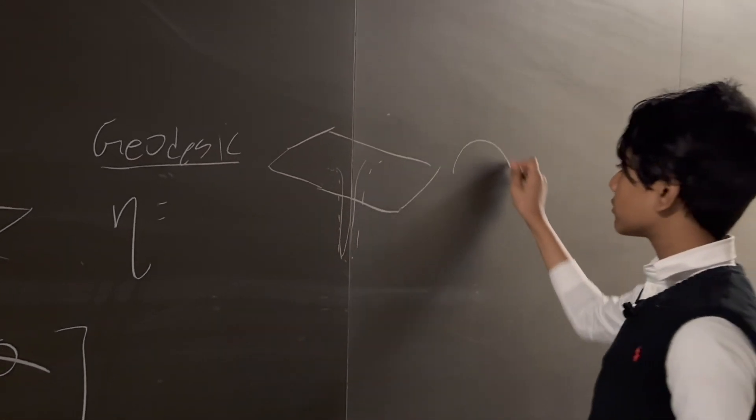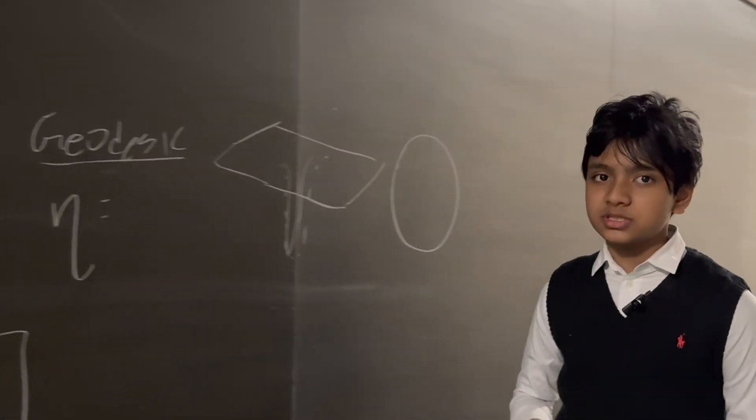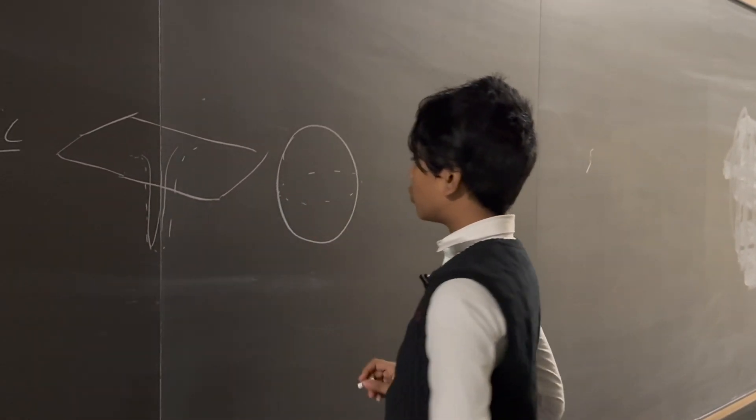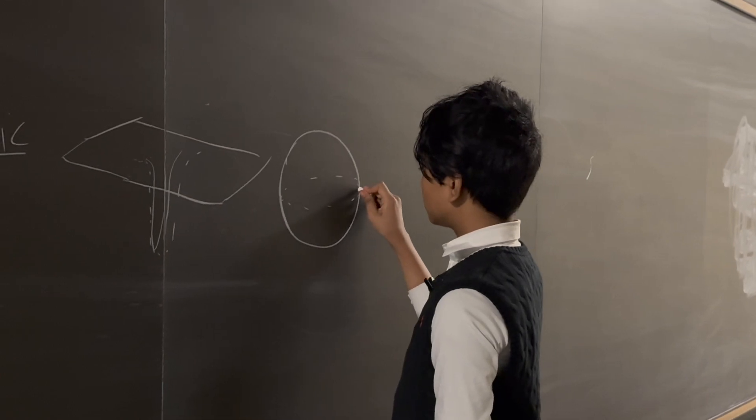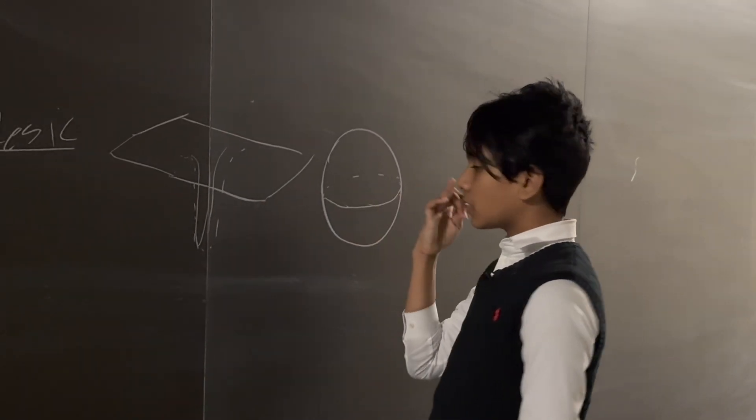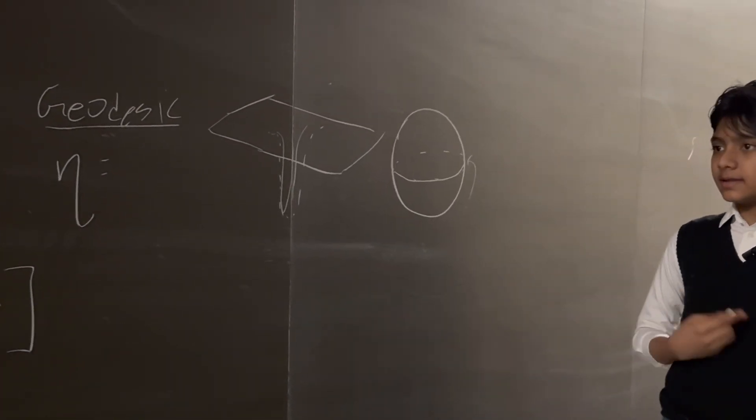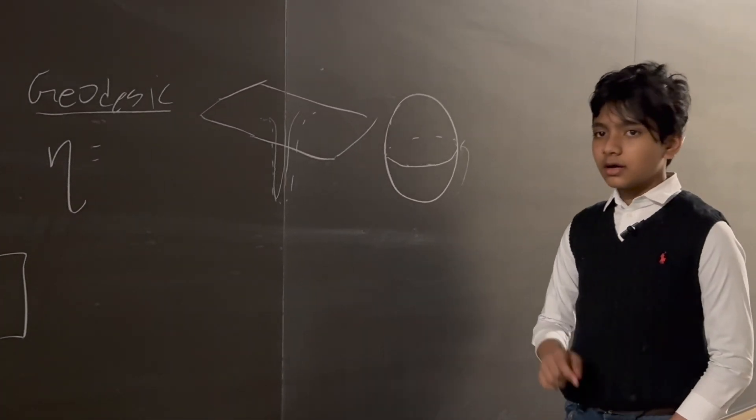I mean, spherical geometry itself, and a sphere is one of the most simple curved spaces, is a very widely studied field. So spherical geometry itself is very hard to deal with, and it's very different from Euclidean space.